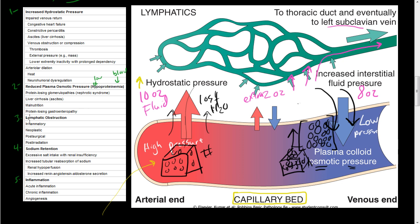Now let's talk about lymphatic obstruction. If we have a lymphatic obstruction, the extra 2 ounces that needs to return through the lymphatic system gets blocked — the pipe gets clogged — so that fluid stays in the tissues and ultimately causes edema.